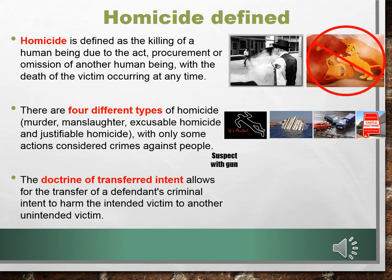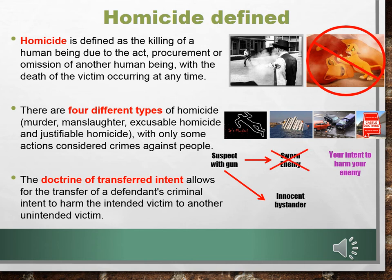Here's how transferred intent works. Our suspect with the gun wants to kill his sworn enemy. His intent was to harm his enemy, but he missed and killed an innocent bystander. Because of this, we transfer that intent to the person actually harmed. In other words, you can be held accountable for the homicide of the innocent bystander even though you didn't mean to kill them.